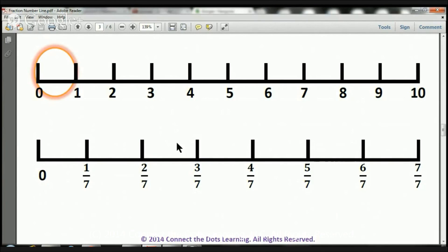1, 2, 3, 4, 5, 6, 7. As you know, 7 7ths equals 1.